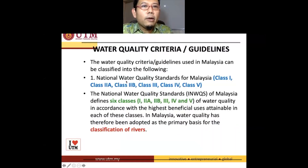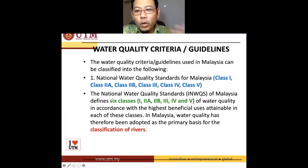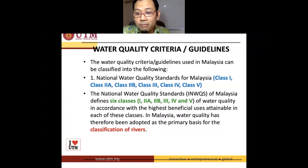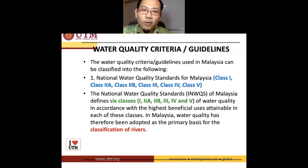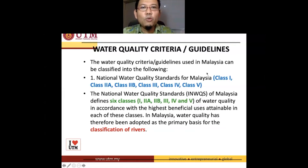The NWQS basically classifies rivers into classes — class one up to class five. This is like classifying university students: first class, second class upper, second class lower, third class, and so on. Just as humans like to classify humans, they also classify rivers — class one up to class five. I'm assuming most of you have already learned this.